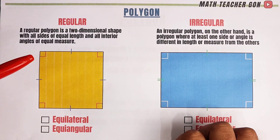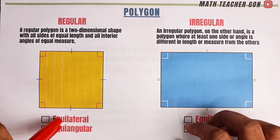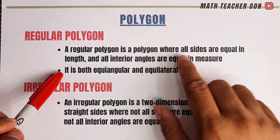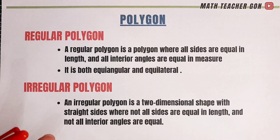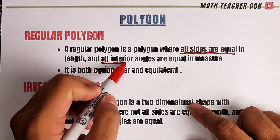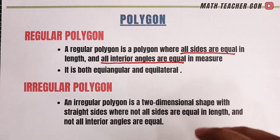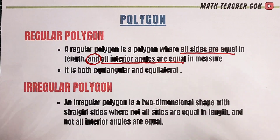So what we have here are examples of regular and irregular polygons. But before we start differentiating these two, let us define first what is a regular and irregular polygon. When we say regular polygon, these are polygons where all sides are equal in length and all interior angles are equal in terms of measure. When you say the polygon is regular, we need to check if the given sides are all equal and all interior angles are equal. Remember: all sides are equal and all interior angles are equal — the word is 'and,' meaning both sides and interior angles must be equal.